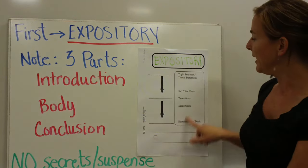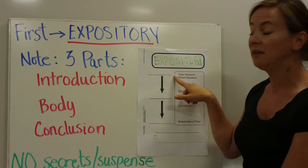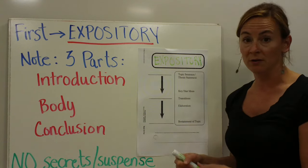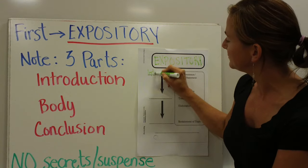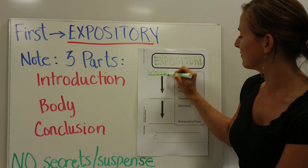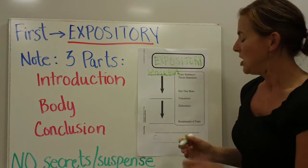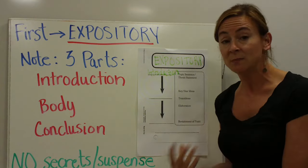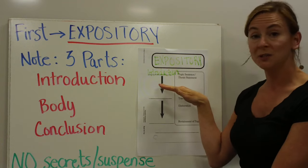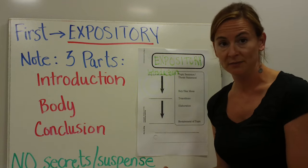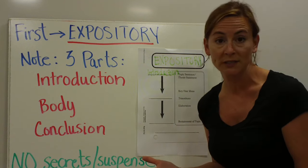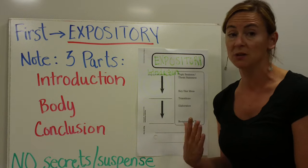So on your handout, go ahead and fill out the lines in order. So the first is introduction. You will notice that in expository writing, in the introduction, that is where the topic sentence, or the thesis statement, is given. You will know exactly what you're going to be reading about in the expository piece.